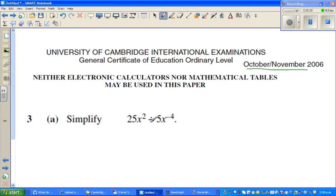So simplify question number 3. 25x squared divided by 5x to the power of 4. So this is same as 25x squared divided by, how will you write x to the power of negative 4?